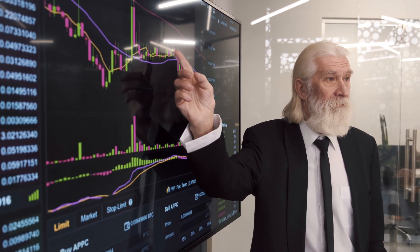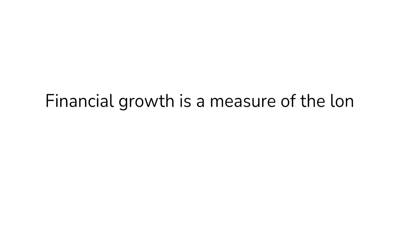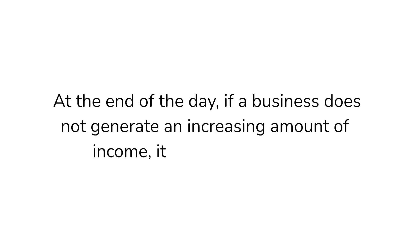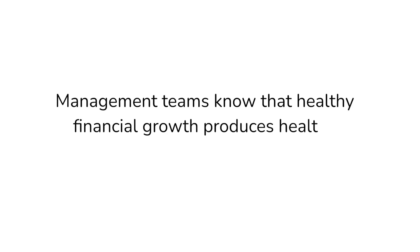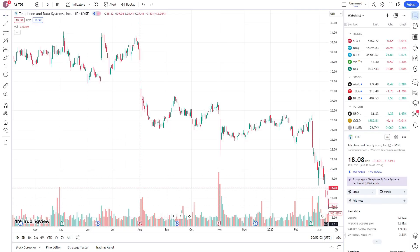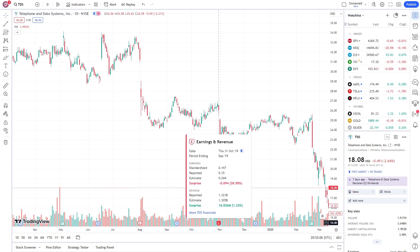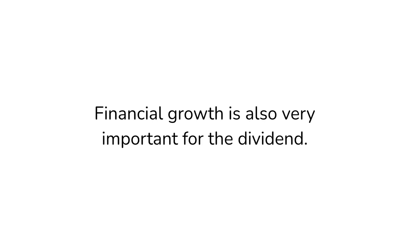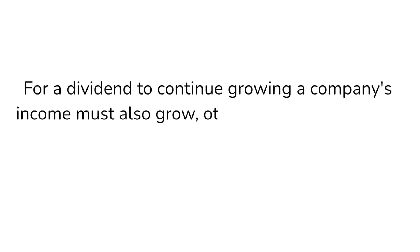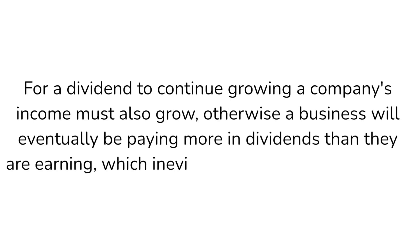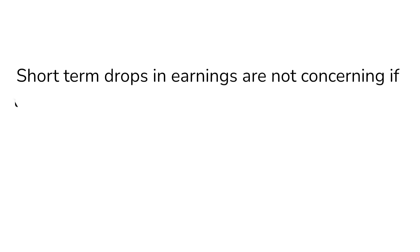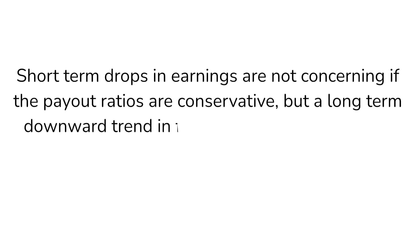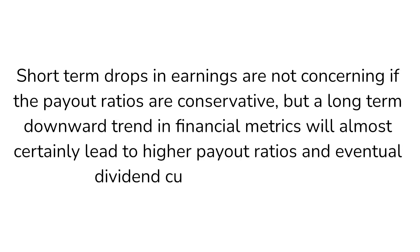Financial growth is a measure of the long-term viability of the company and can help you estimate share price growth. If a business doesn't generate an increasing amount of income, it'll eventually fail. Management teams know that healthy financial growth produces healthy businesses, and investors know this too. That's why if a company misses earnings estimates during a quarterly report, the stock price often drops as investors sell their shares. For a dividend to continue growing, a company's income must also grow. Otherwise, a business will eventually be paying more in dividends than their earnings, which inevitably leads to a dividend cut. Short-term drops in earnings are not concerning if the payout ratios are conservative, but a long-term downward trend in financial metrics will almost certainly lead to higher payout ratios and eventually dividend cuts or suspensions.